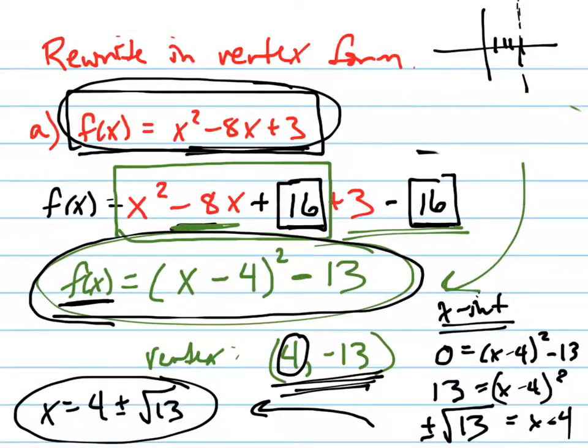My vertex is going to be down here at 4, negative 13. It's going to be down there. And it's opening which way? It's opening up. What's the square root of 13 roughly? Let's see. It's between 3 and 4. So your graph is going to be going like this. 1, 2, 3, 4. Your graph is going to be like this.